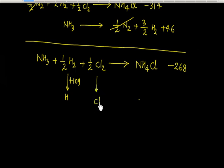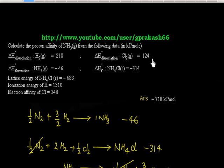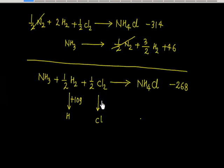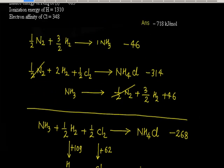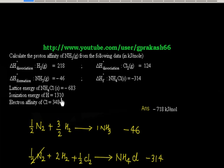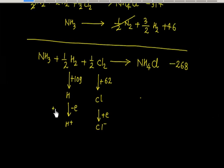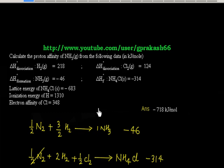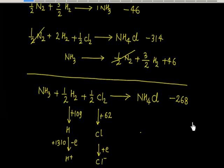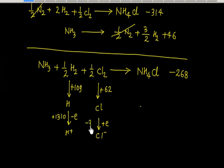If I break chlorine into chlorine atoms, the energy needed is 124 kJ per mole, so half of that is 62 kJ. Now hydrogen loses one electron to form H⁺ — this is ionization energy, and energy must be supplied: 1310 kJ. Chlorine gains one electron to form Cl⁻ — electron affinity is negative, so for chlorine we have minus 348 kJ released.